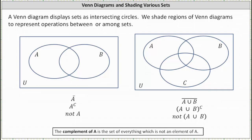For a quick review, the complement of A is the set of everything which is not an element of A. Two common ways to denote a complement is A with a bar over it as well as A with a capital C in what looks like the exponent position. We can think of a complement as not A.